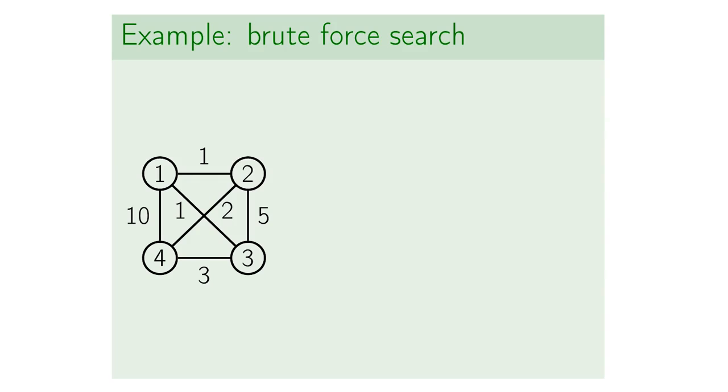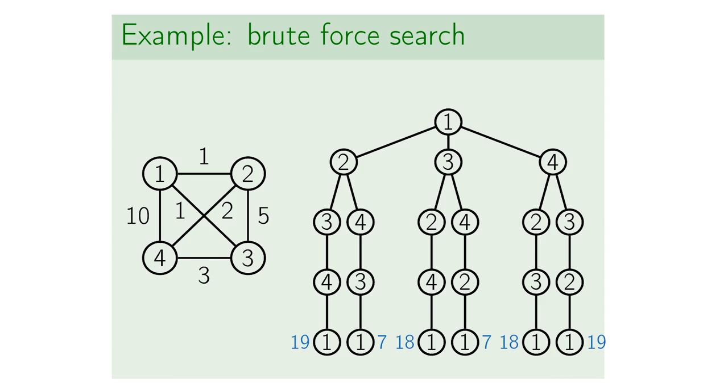Now, we illustrate the main idea of the branch-and-bound technique on a toy example. So consider the following graph consisting of four vertices. The graph is complete, meaning that there is an edge between any pair of vertices. One way to solve this is to consider all possible cycles. For this, we consider the following tree.